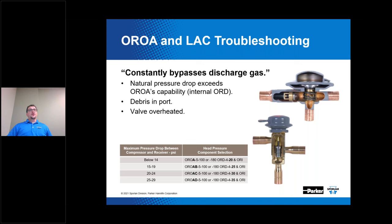More troubleshooting for the OROA and LAC: constant bypassing of discharge gas could happen due to the natural pressure drop exceeding the OROA's capability. The internal ORD opens on rise of differential pressure, so you need to ensure the pressure drop between the compressor and the receiver is below the setting of that ORD. Another reason for constant bypassing could be debris in the port or overheating of the valve. You can order an inlet strainer purchased separately that can be installed in the LAC4 and the OROA if desired.